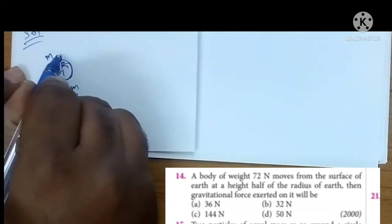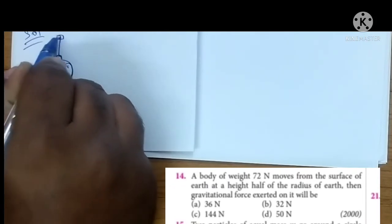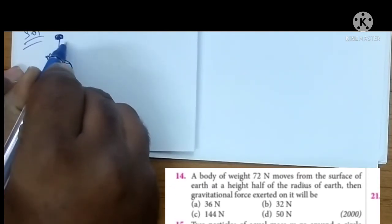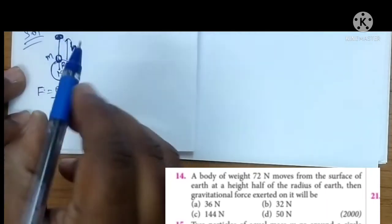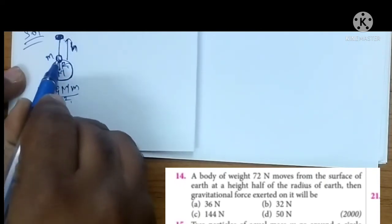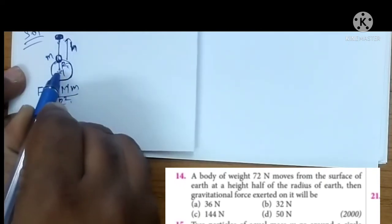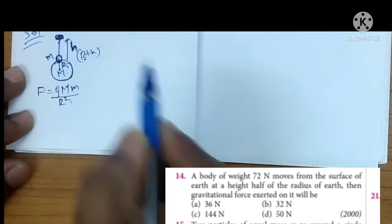I am going to take it at height h. इस object को मैं कहां ले गया, h height के ऊपर ले गया. अभी, यहां से यहां तक r है, यहां से यहां तक h है. So यहां से, origin से, center से, कितना होगा, यहां तक r plus h होगा.